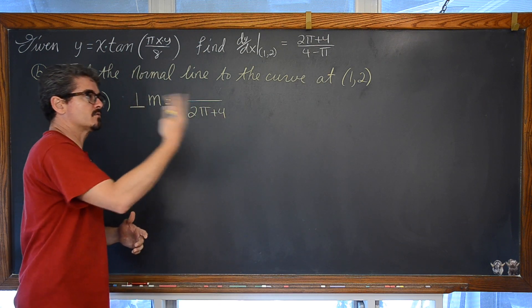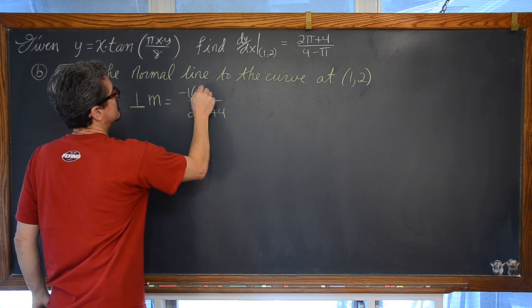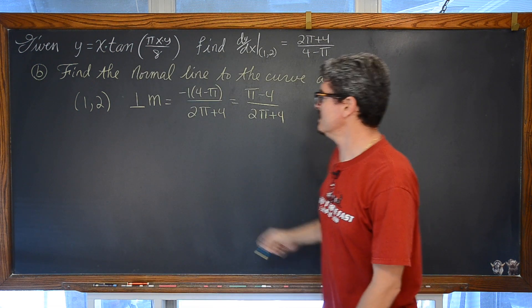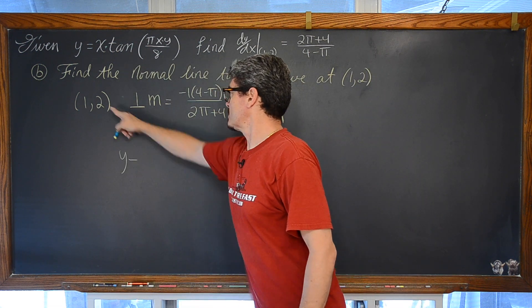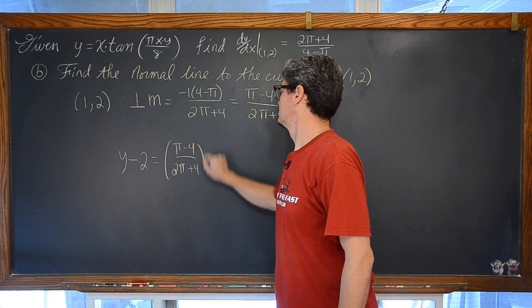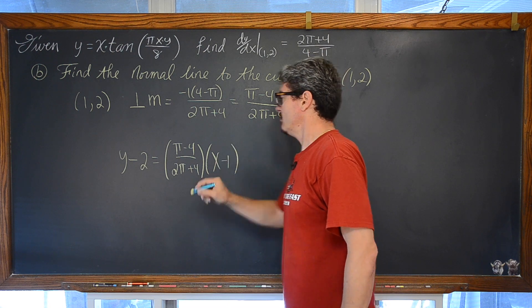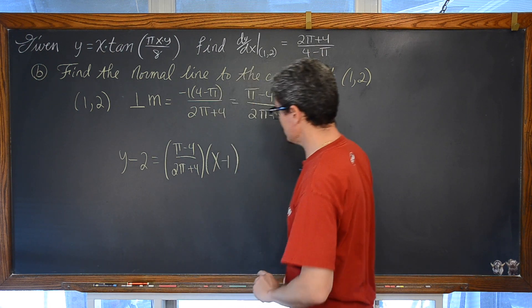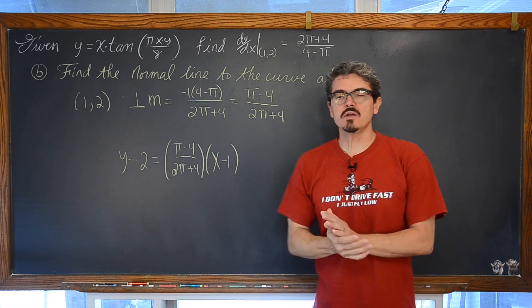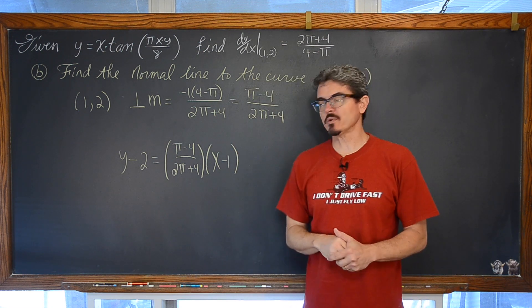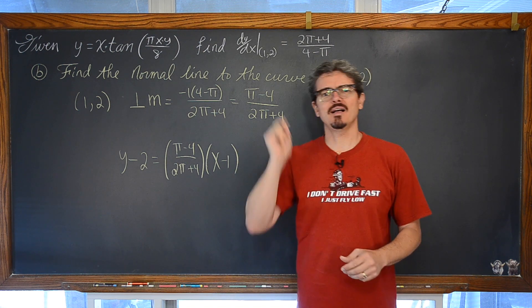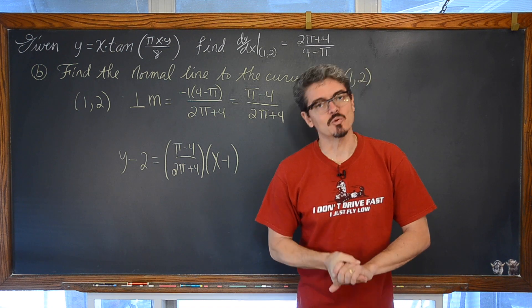So the equation of the normal line is y minus 2 is equal to m times (x minus 1). Let's make sure I do not make any errors — matches my notes. Excellent. IB is happy with equations of tangent lines and normal lines in point slope form. If you are in an AP class, they are going to want those equations in slope intercept form.